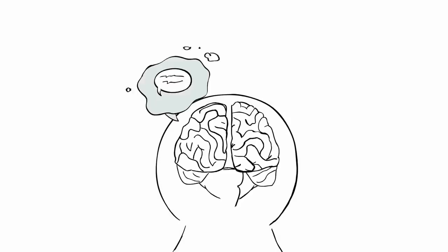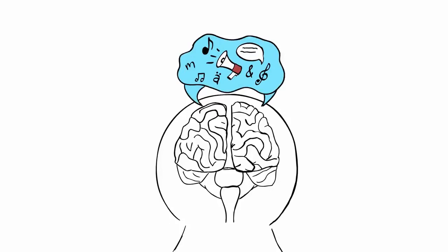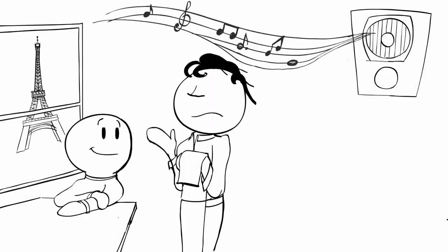Traditionally, speech functions were thought to exist in the left hemisphere of the brain, while music functions existed in the right hemisphere. But today, it's widely accepted that both hemispheres are responsible for music and speech. What this means is that music functions can actually improve speech functions and vice versa. In a sense, both activities are working the same muscle.